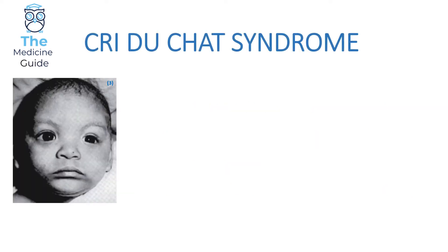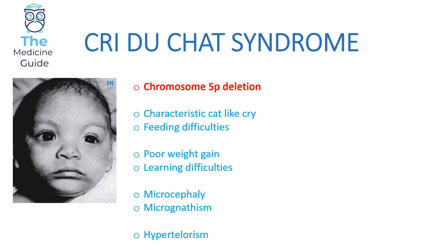This is an example of Cri du Chat syndrome. Cri du Chat syndrome is caused by a chromosome 5p deletion. The mother or father will present with a child and complain that the child has a cat-like cry, which is very characteristic. The child will experience feeding difficulties and poor weight gain, and unfortunately will suffer from learning difficulties, microcephaly, micrognathism, and hypotelorism — where the eyes are spaced quite far apart.